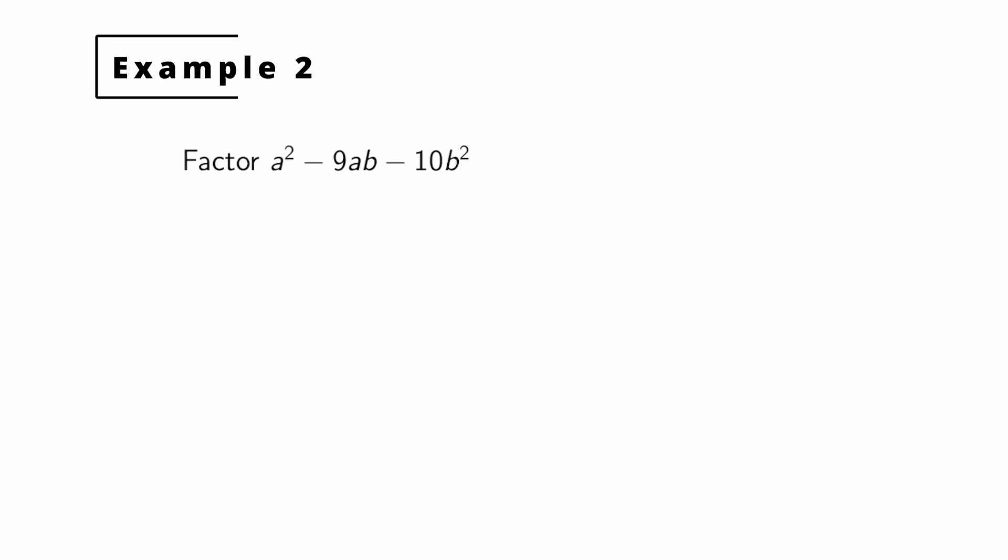Here we have a slightly more complicated example. So this doesn't quite fit our quadratic trinomial mold that we had previously, the x² + bx + c, because now we have two different variables. But the coefficient of the first variable here, a², is 1. So we can still use approximately the same technique.